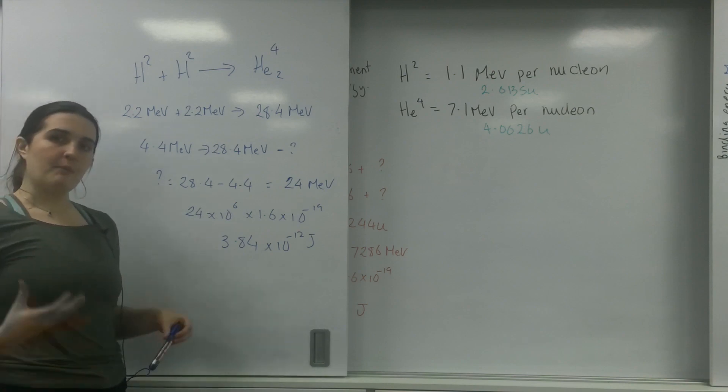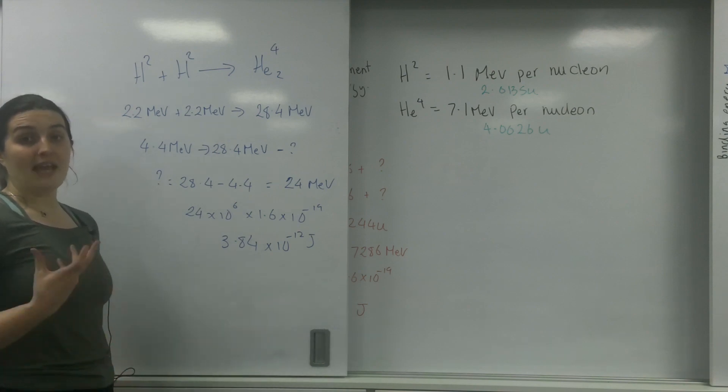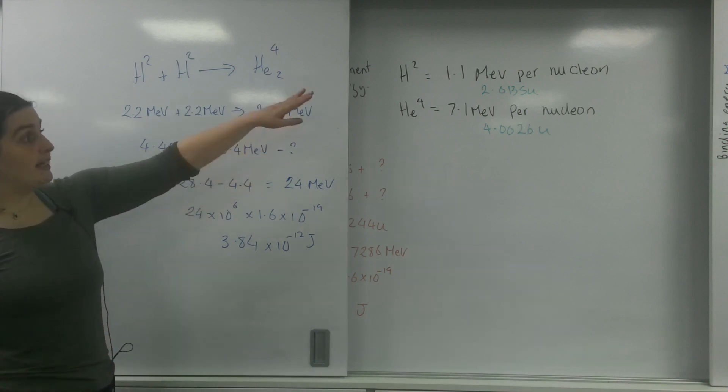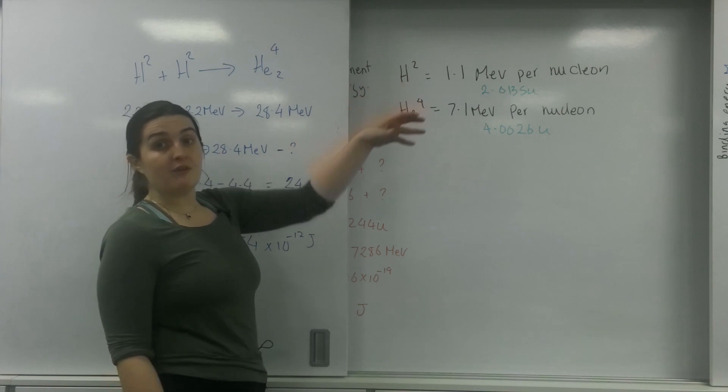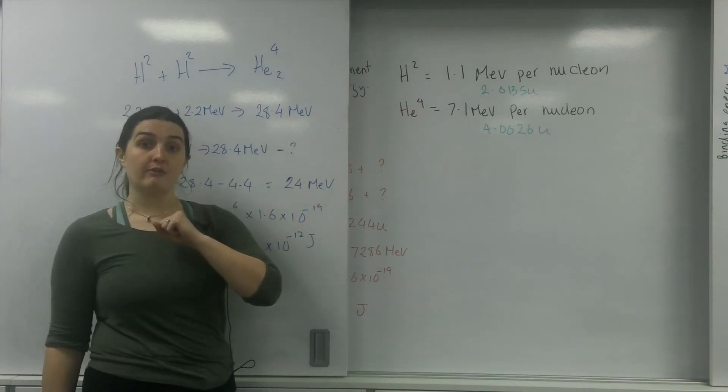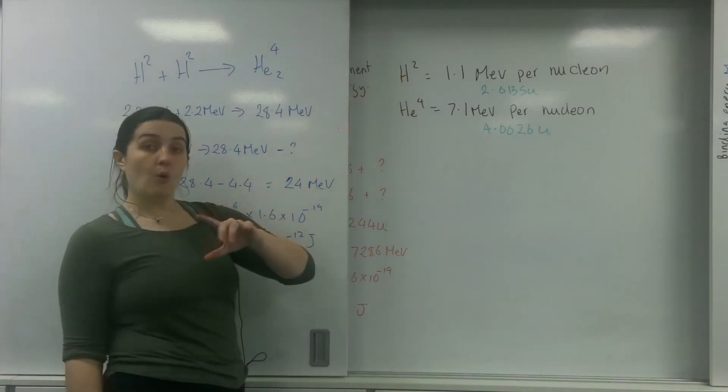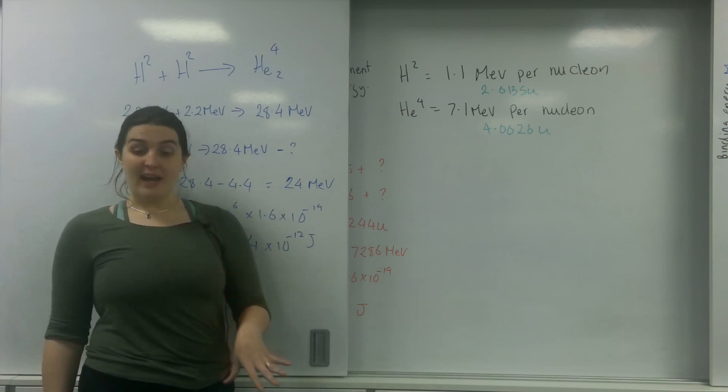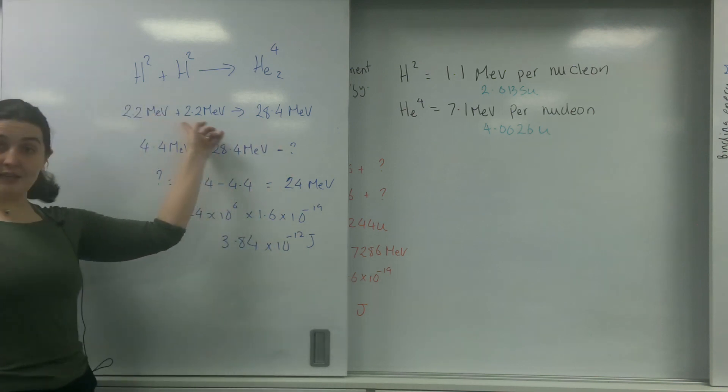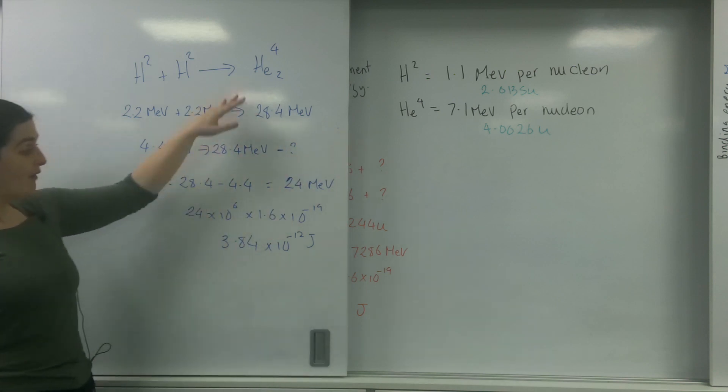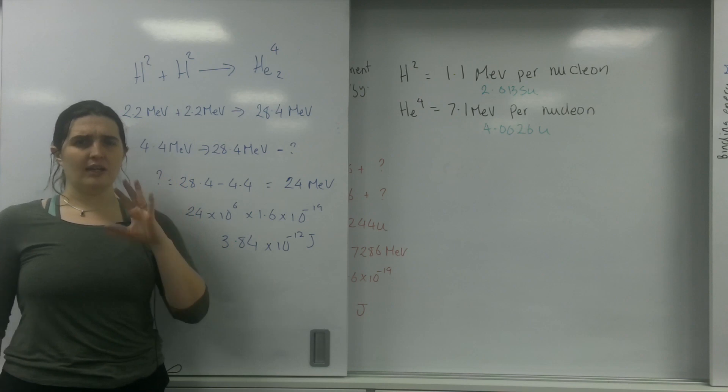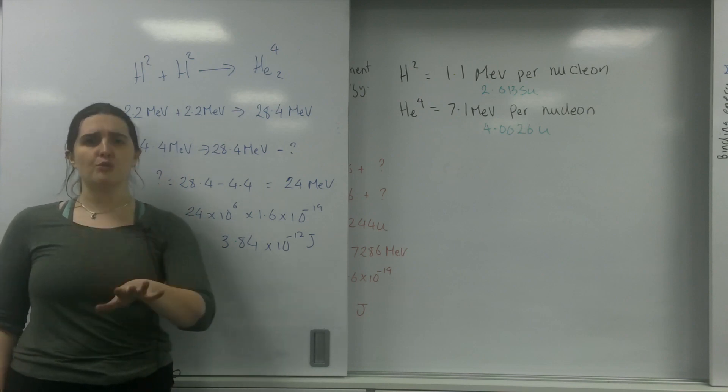But what this is trying to show you is that the examiner may give you various different ways of working out the energy that is released. They may give it to you in MEV. So they may give you the binding energy per nucleon for this fusion here. Or they may give it to you in atomic mass units. Whatever way, just stick with what you've been given and carry on until the end and when you convert. Don't convert at the start. Keep with what you are given. And remember, do not round.